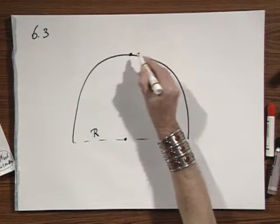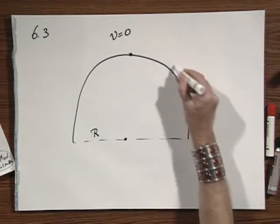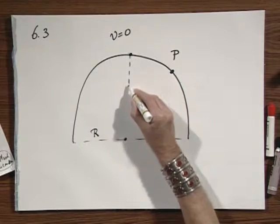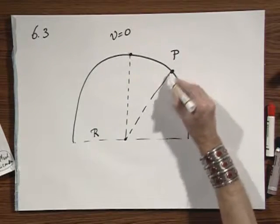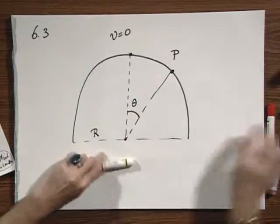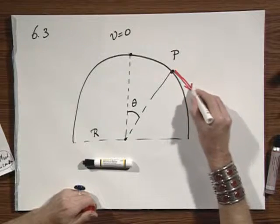She starts here and her speed is zero. She starts to slide in this direction. And at point P, the angle is theta. She has here a certain tangential velocity. I call that V.